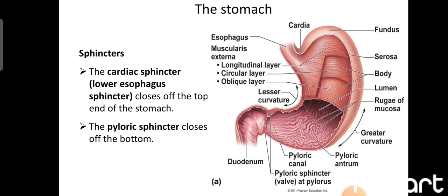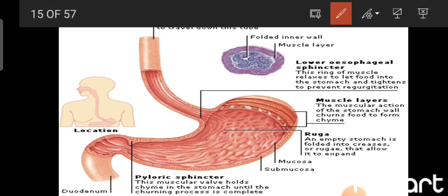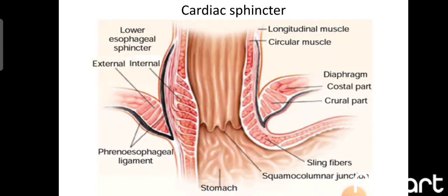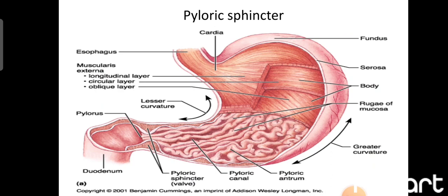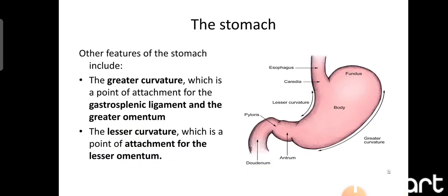The cardiac sphincter is not an anatomical sphincter — it is only a physiological sphincter, visualized only during contraction. The pyloric sphincter is the anatomical sphincter lying at the lower level of the stomach, formed by reduplication of circular smooth muscle fibers. The cardiac sphincter prevents backflow of gastric contents into the esophagus, and the pyloric sphincter controls movement of gastric contents into the small intestine.